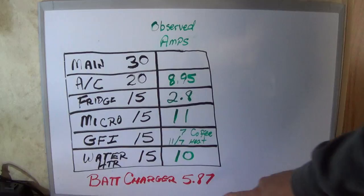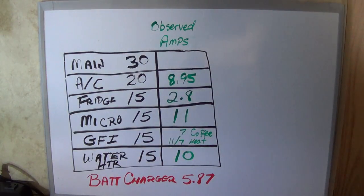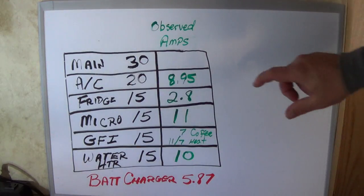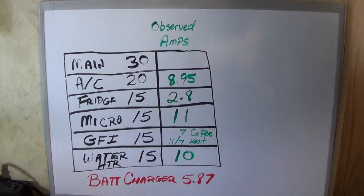And then what I have down in the bottom in red is that's my battery charger. It doesn't have an AC circuit breaker, it has a DC breaker, but it is going to pull 5.87 amps. These are actual observed amperage use that I've observed in my travel trailer because I'm trying to run it off of solar, so I'm being hyper-conscious of the amount of power that I'm using.